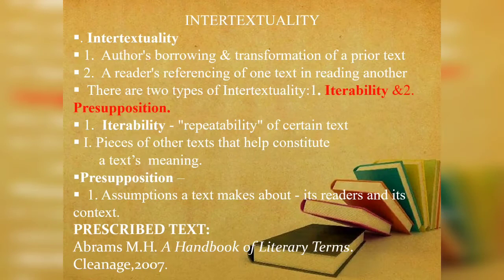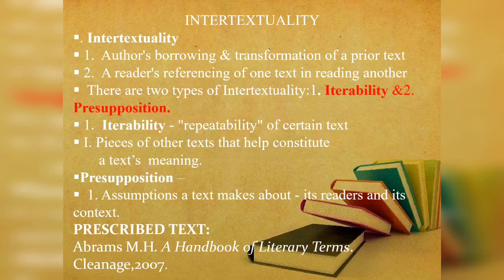There are two further types of intertextuality called iterability and presupposition. Iterability means the repeatability of a certain text — you take a certain text from another source and repeat it in your text. And presupposition means the text creating some assumption about its reader and the context — through its meaning, it creates assumptions about the reader and its context.